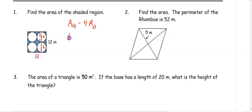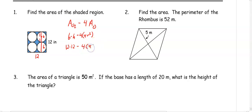The area of the square is base times height minus the area of four circles, which is pi r squared. So we have 12 times 12 minus four times pi, three squared. So we get 144 minus 36 pi inches squared.